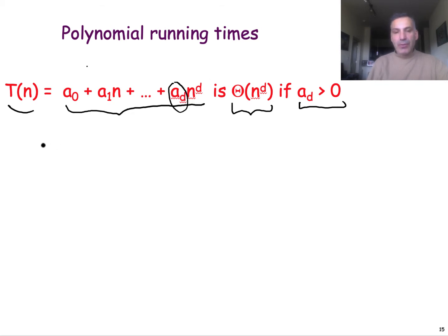First notice that for any of the lower exponent terms, say a_i n^i where i is less than d, this is smaller or equal than |a_i| n^i, which is of course lower or equal than |a_i| n^d for any n.